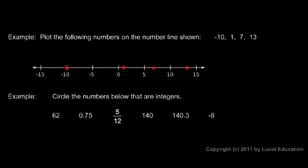And in this next example we're just told to circle the numbers that are integers. So 62 is an integer, decimal numbers are not, and a fraction like that is not an integer. 140 is an integer, 140.3 is not, and negative 8 is an integer.